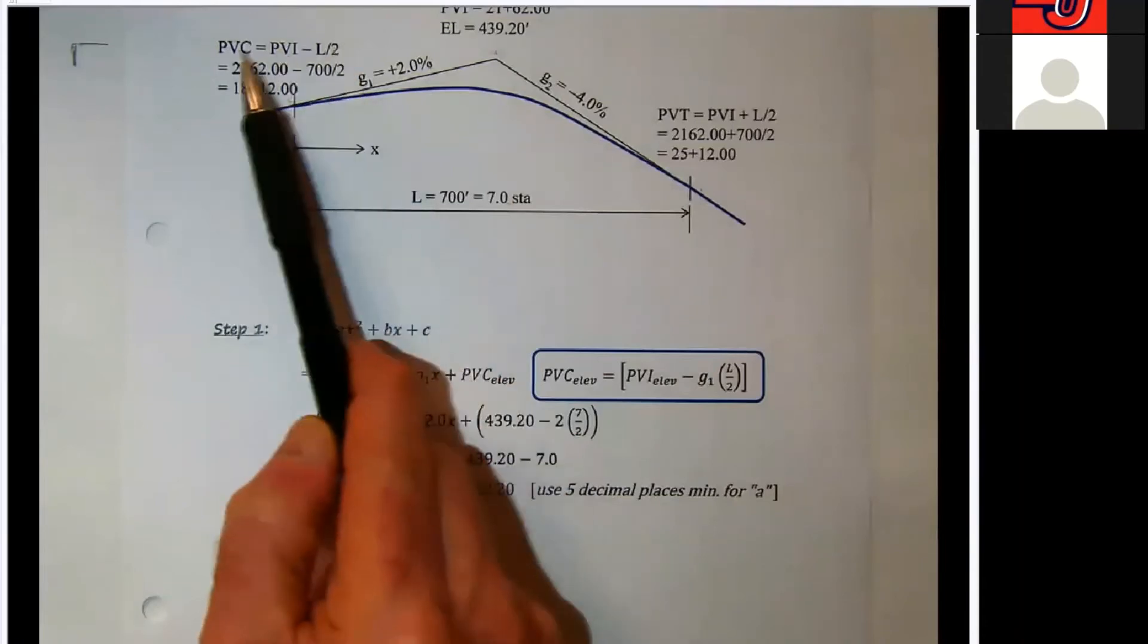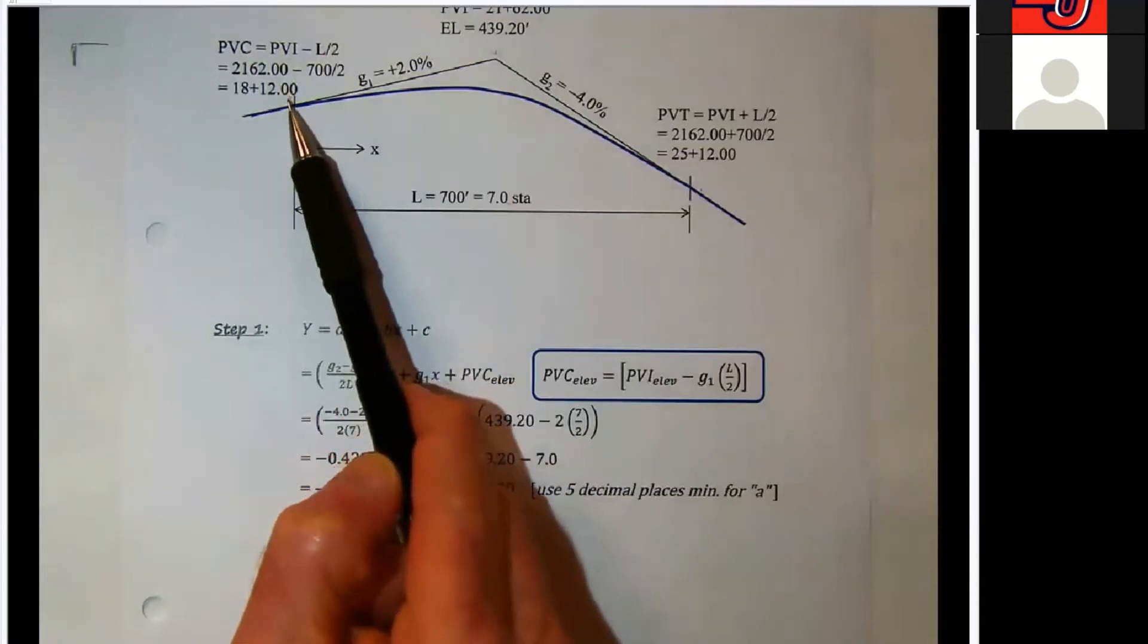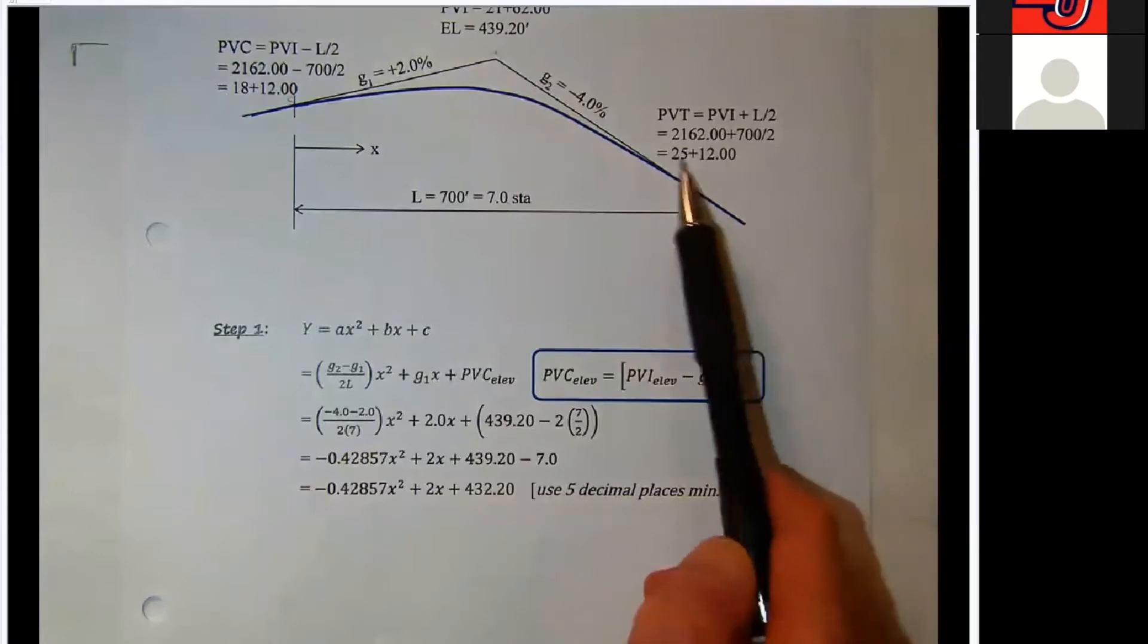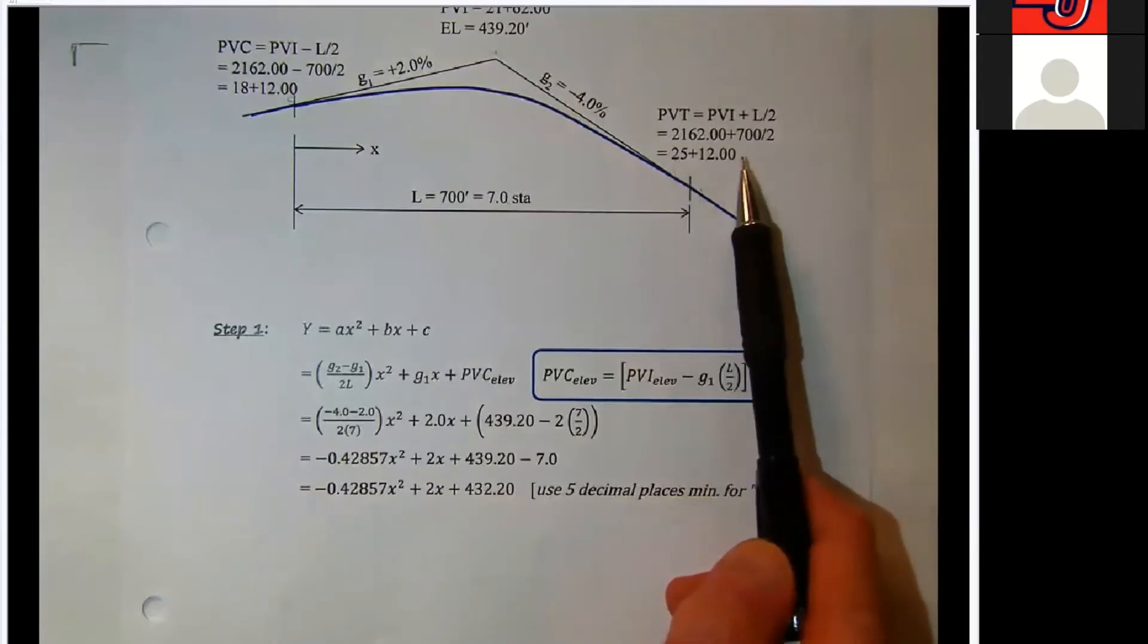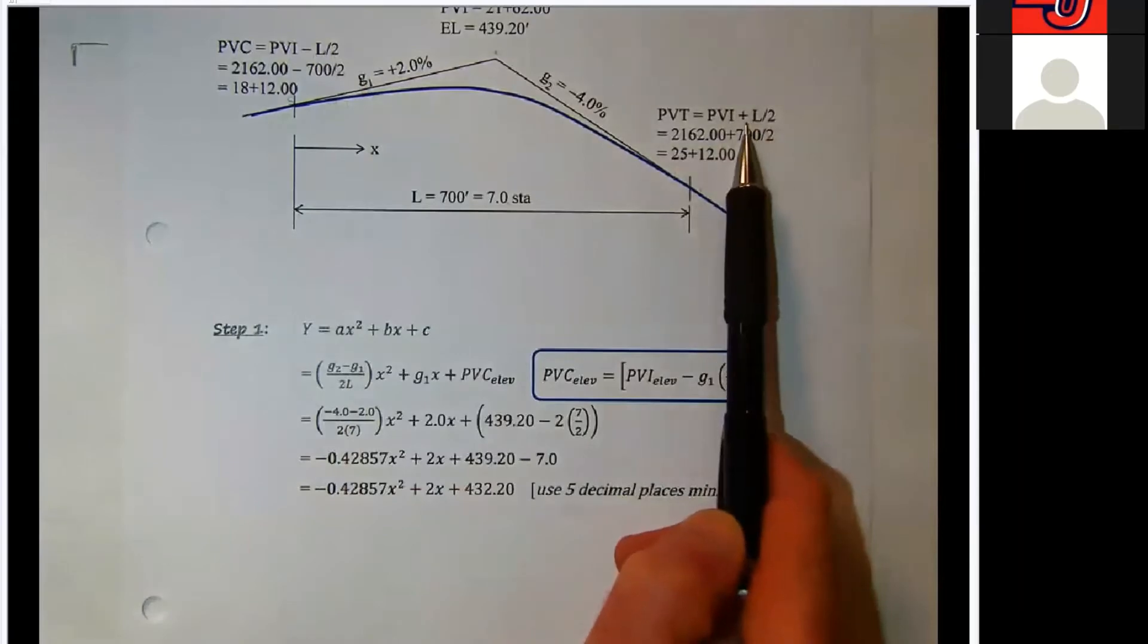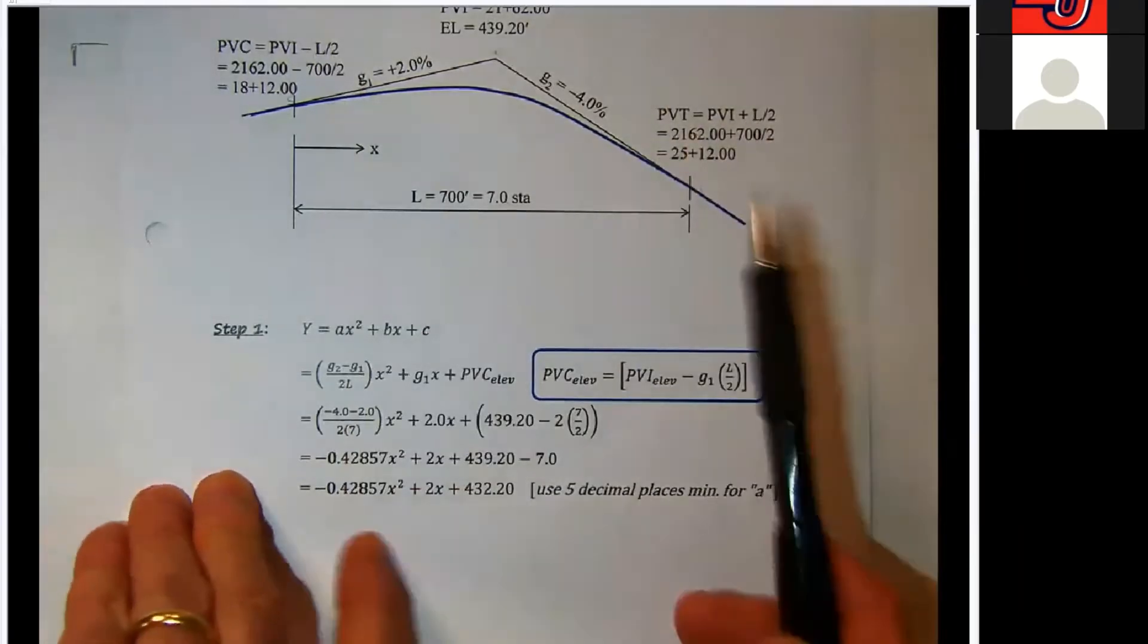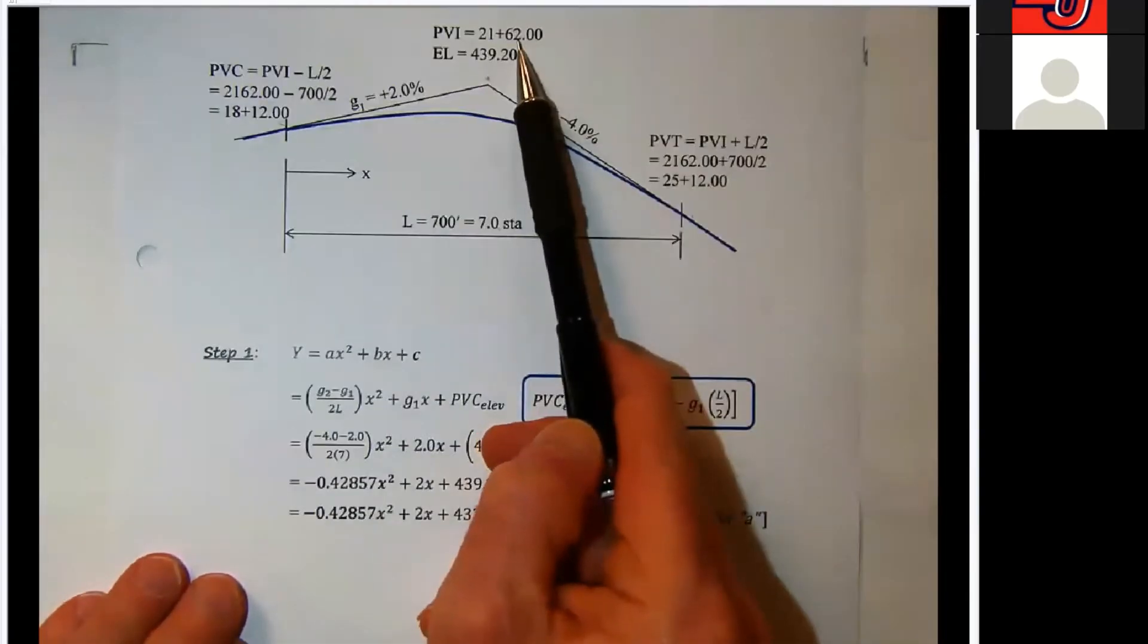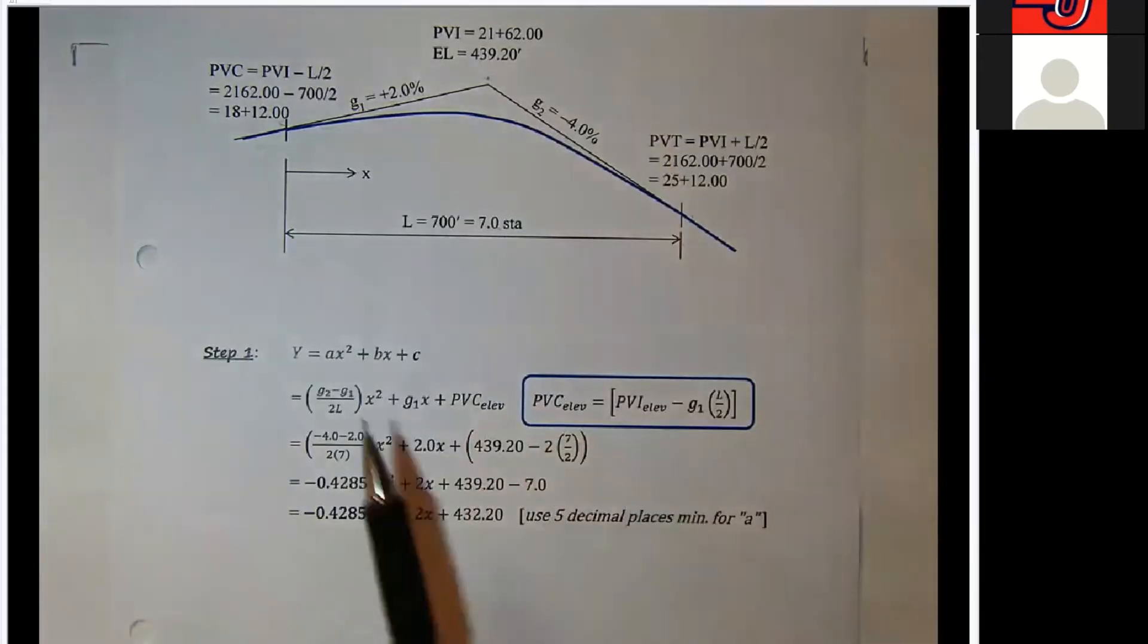I've just shown the calculations to get to the PVC station and the PVT station. If you need those, it's subtracting L over 2, adding L over 2 from the PVI station here.